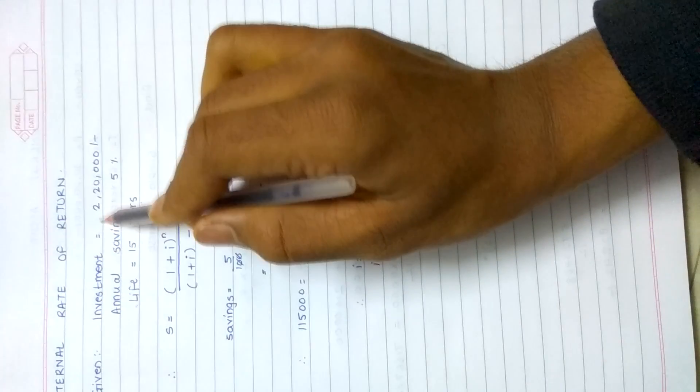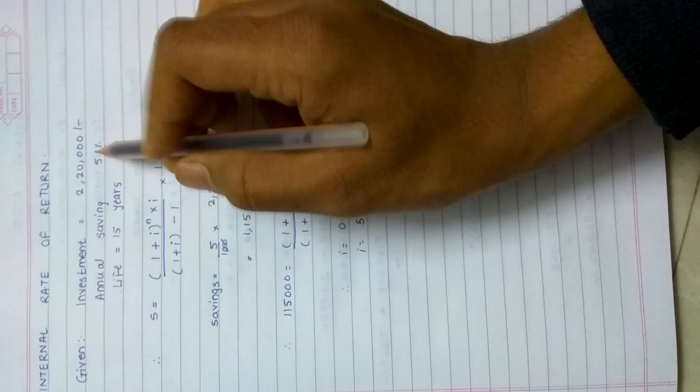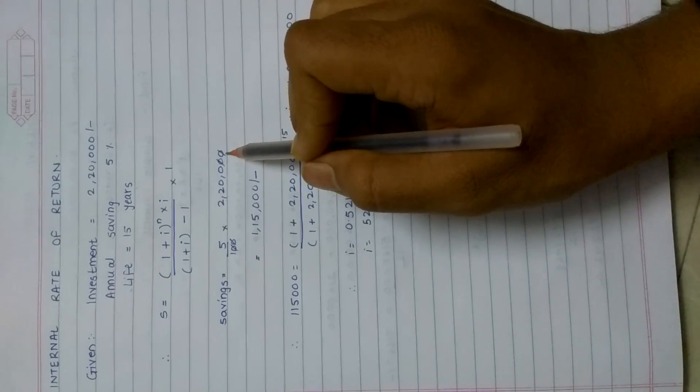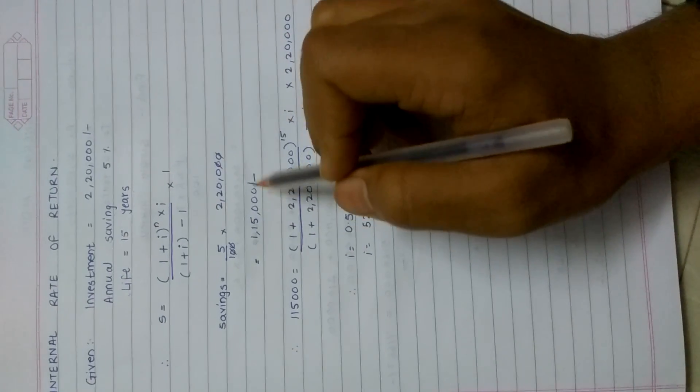Saving was on the investment, so we first calculate savings: 5 divided by 100 into 2 lakh 20 thousand, which will be 1 lakh 15 thousand, that is savings.